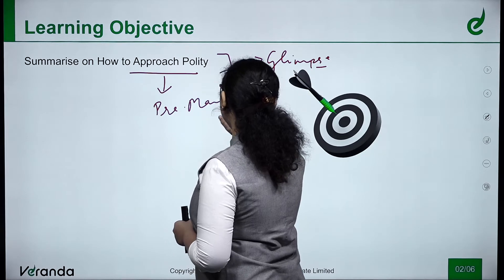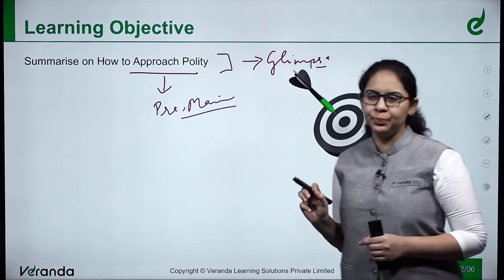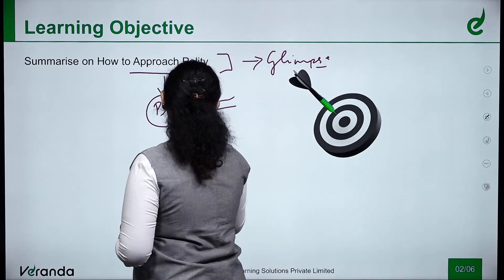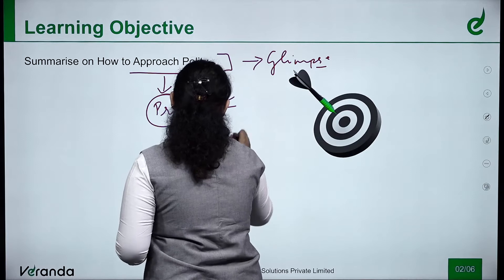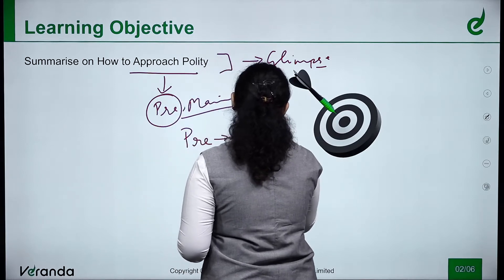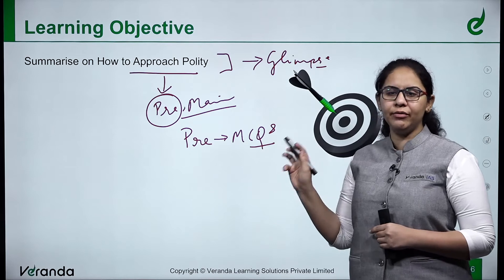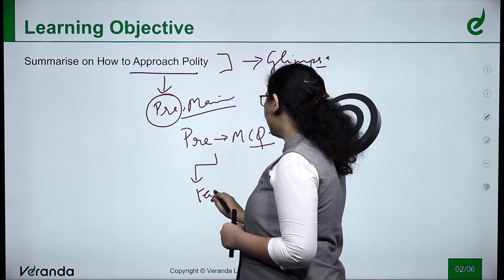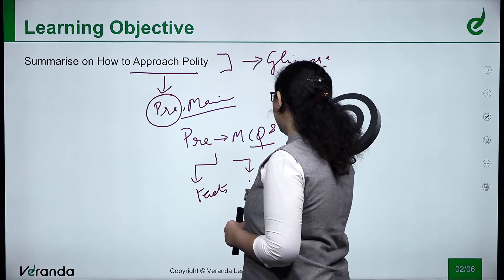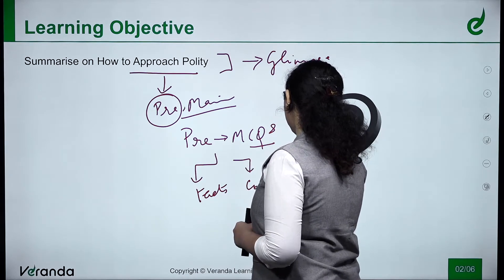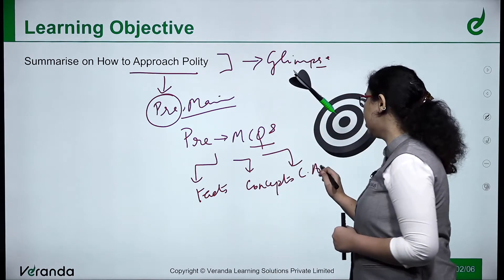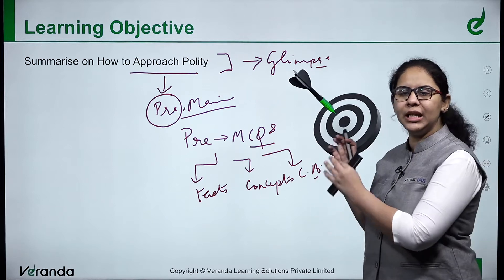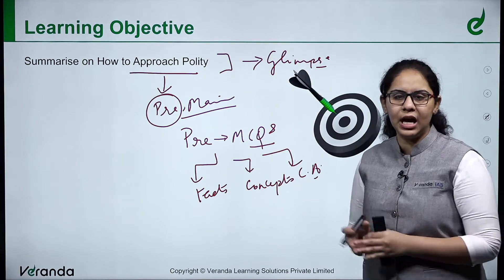Mainly, the approach for these two stages differs a bit. At the preliminary stage, we get MCQ type of questions. The focus is on facts, concepts, and current affairs. Keep this in mind — not only facts, not only concepts, not only current affairs. The amalgamation of all these three is what UPSC asks you.